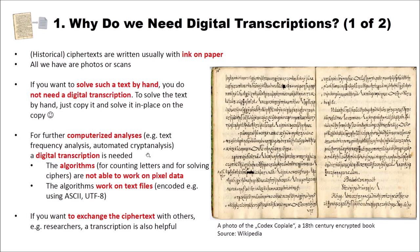Why do we need digital transcriptions? First, the algorithms for counting letters and solving ciphers are not able to work on pixel data — you cannot put a picture into an algorithm and have it analyze pixel by pixel. Right now, our algorithms work on text data, meaning text files encoded as ASCII or UTF-8. Also, if you want to exchange ciphertexts with other researchers, a transcription is helpful since they would also work on text data. The pictures are still important because when we create transcriptions we make errors, and to fix an error you have to go back to the picture.